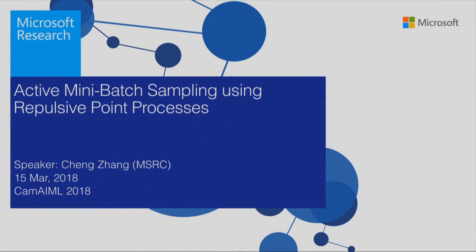Here is Cheng Zhang. Cheng joined us just very recently here at Microsoft Research Cambridge. She will not be talking about what she did here but what she did before. The title is Active Mini-Batch Sampling Using Repulsive Point Processes.